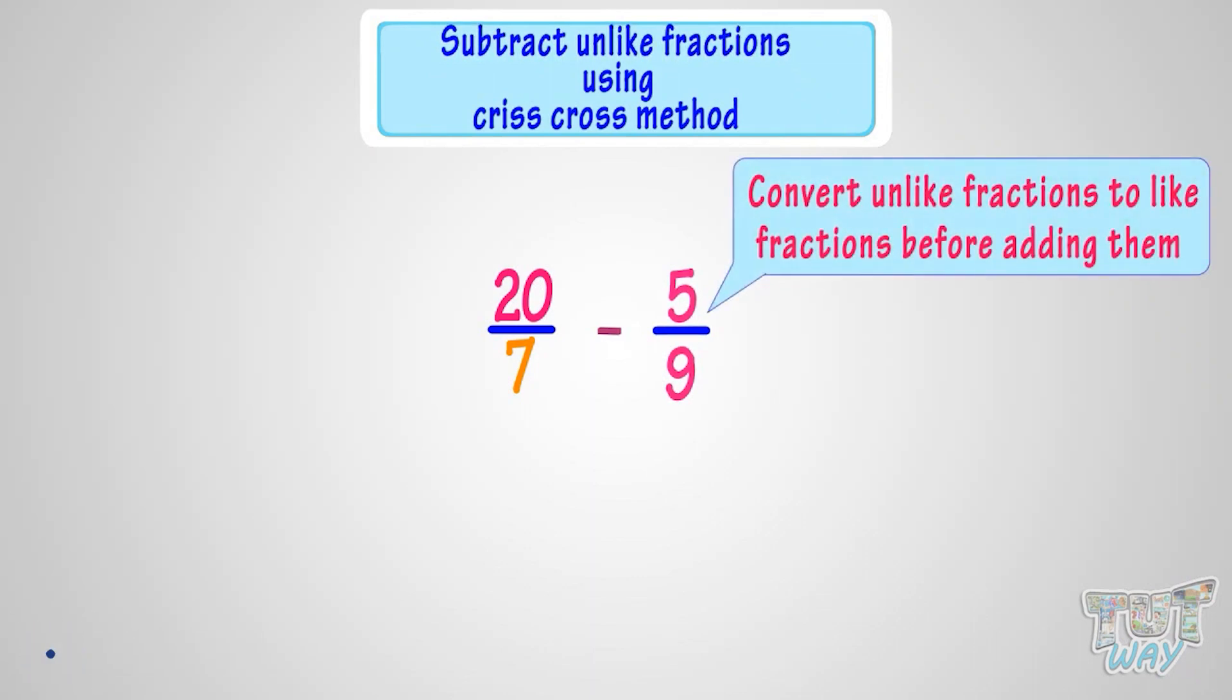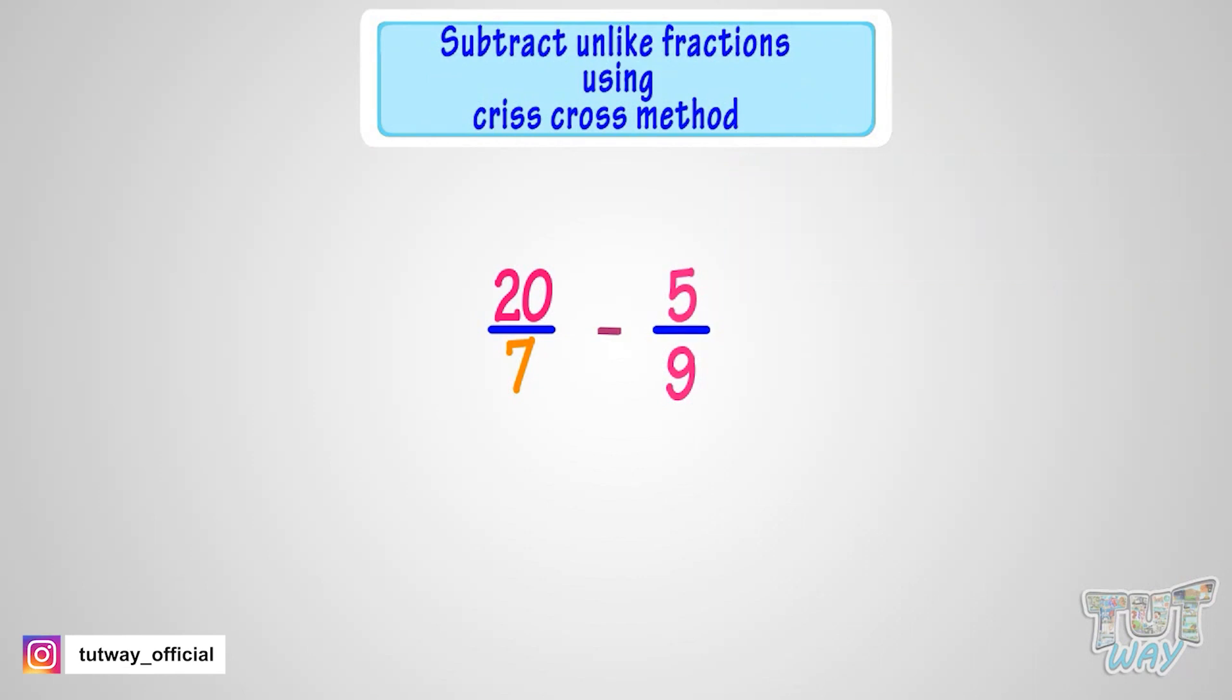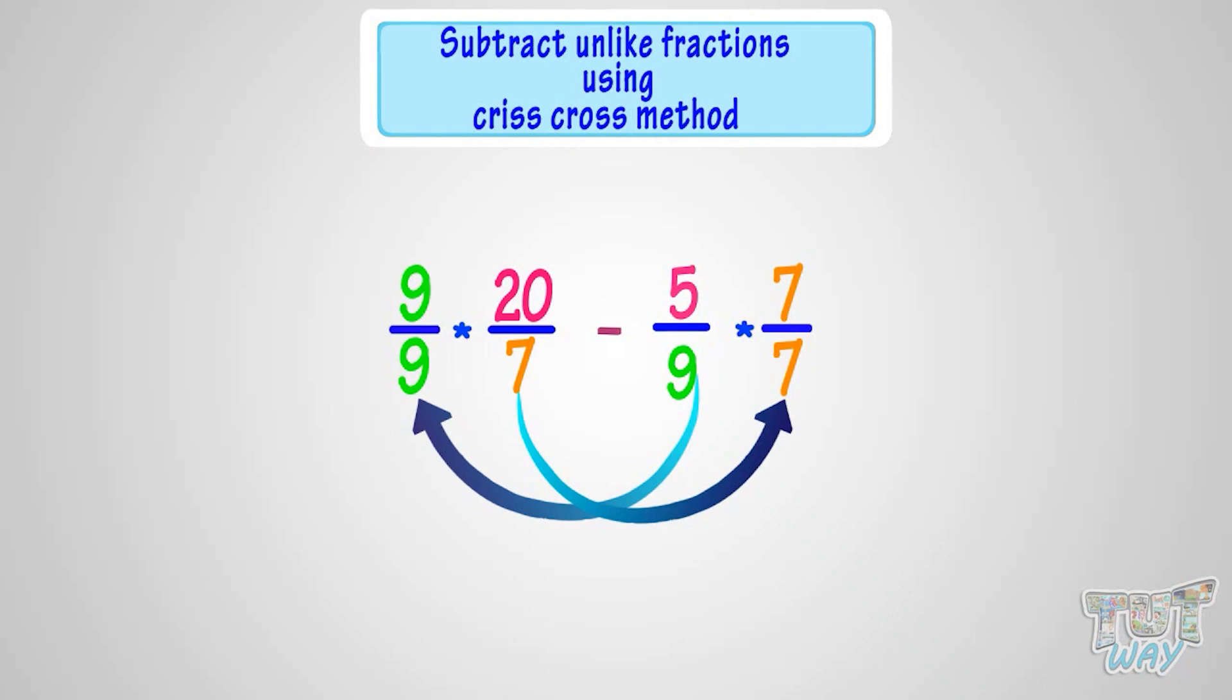In the criss-cross method, what we will do is multiply 20 by 7 with 9 by 9, that is the denominator of the other fraction. And multiply 5 by 9 with 7 by 7, that is the denominator of the other fraction.